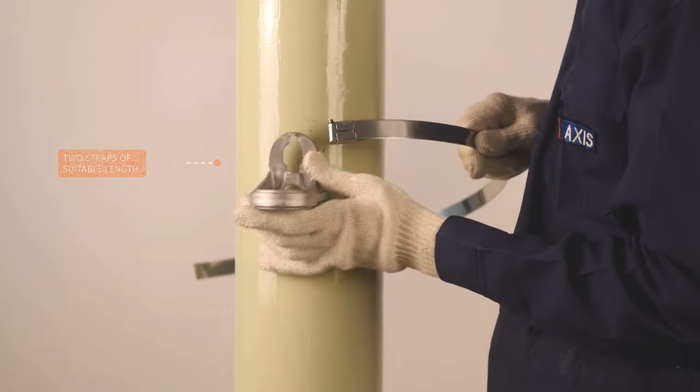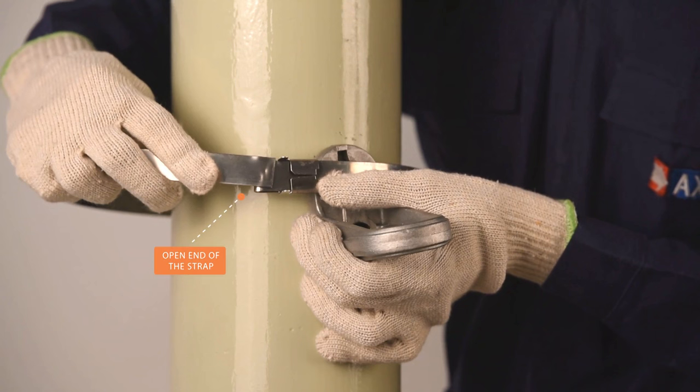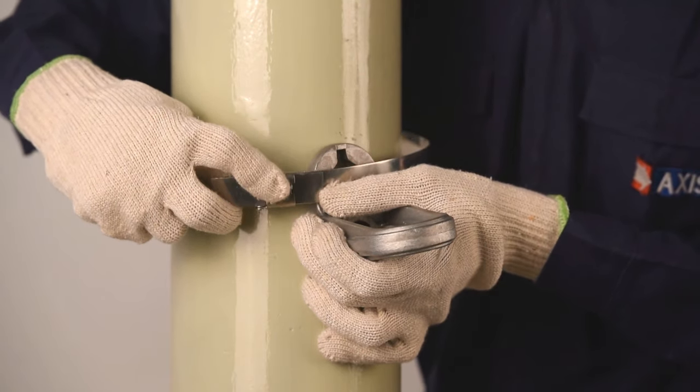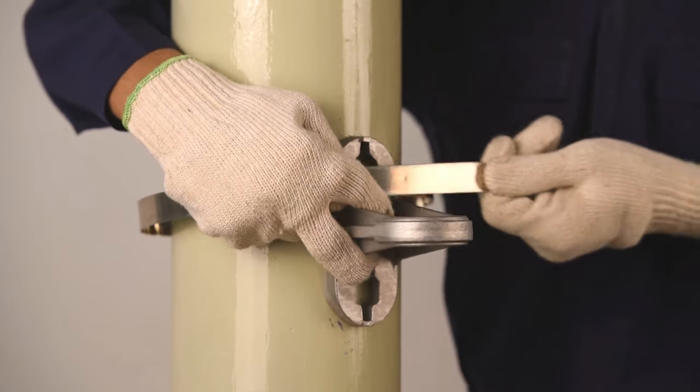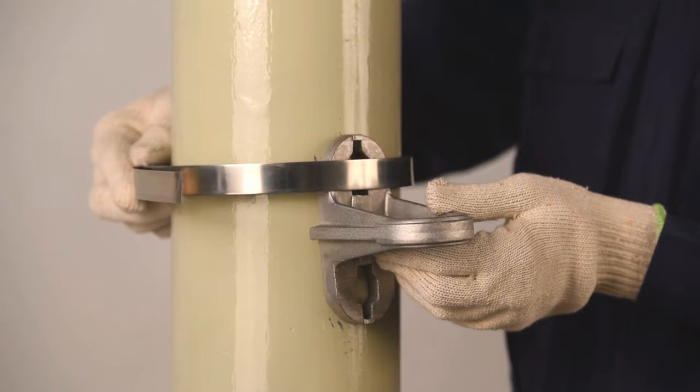Take two straps of suitable length. Pass the open ends of the strap through the buckle. Locate the bracket on the pole and wrap the strap around them as shown in the video.